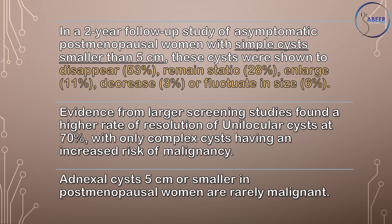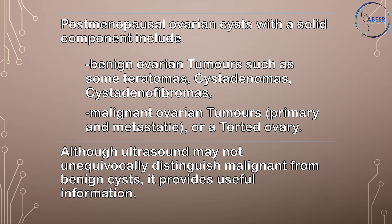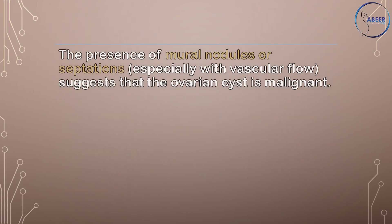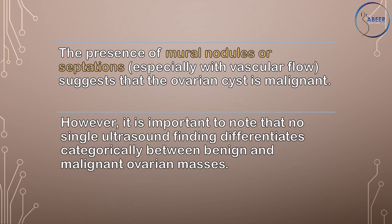Adnexal cysts 5 cm or smaller in postmenopausal women are rarely malignant. Postmenopausal ovarian cysts with a solid component include benign ovarian tumors such as teratomas, cyst adenomas, cyst adenofibromas, malignant ovarian tumors (primary and metastatic), or a torted ovary. Although ultrasound may not unequivocally distinguish malignant from benign cysts, the presence of mural nodules or septations, especially with vascular flow, suggests malignancy. No single ultrasound finding differentiates categorically between benign and malignant ovarian masses.